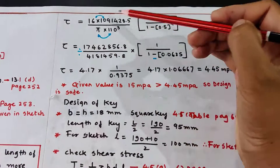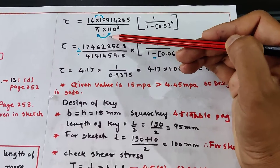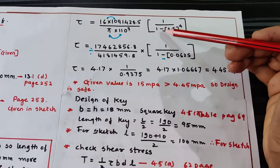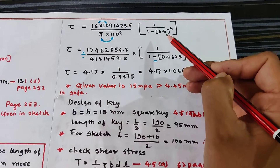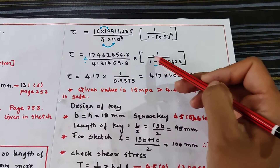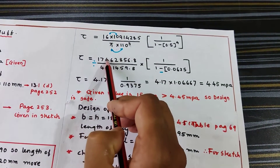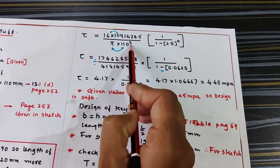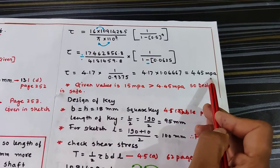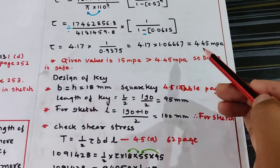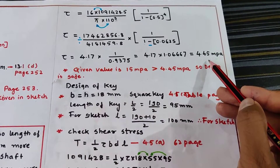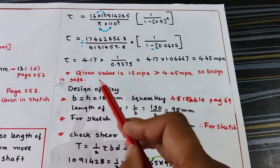Substituting all values: shear stress = 16T / (π D1³) × 1/(1 − K⁴) = 16 × 1,091,428.5 / (π × 110³) × 1/(1 − 0.5⁴). Solving step by step gives an induced shear stress of 4.45 MPa. Since the given allowable shear stress is 15 MPa and the induced stress is 4.45 MPa, the induced stress is less than the allowable, so the design is safe.